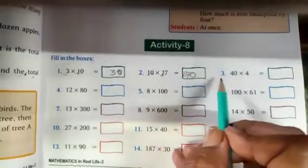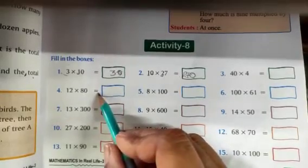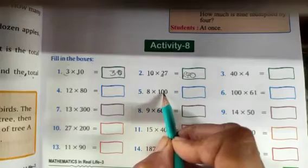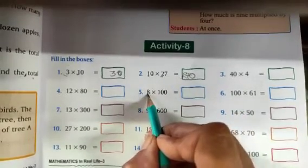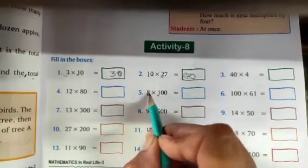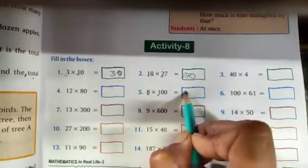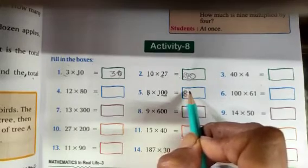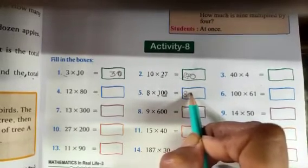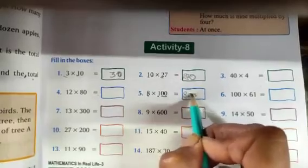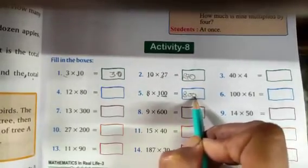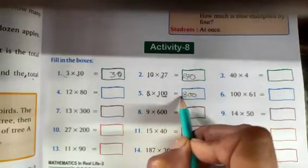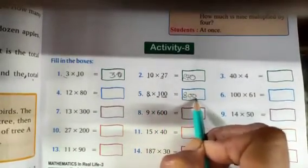In this way, we can solve the 3rd and 4th also. Now you see the 5th one: 8 is multiplied by 100. Again, number is multiplied by number, we get 8, and these two 0s we add to the right of the number to get the product. So our answer is 800. First we multiply this number by this number, and after that we put the two 0s.